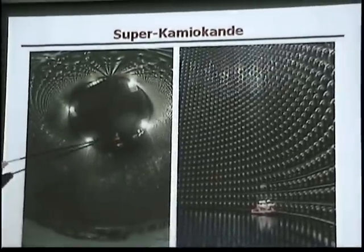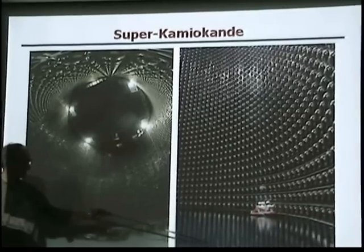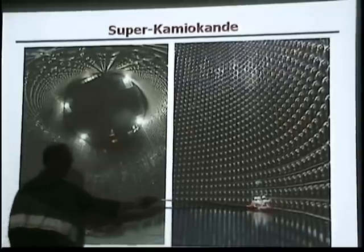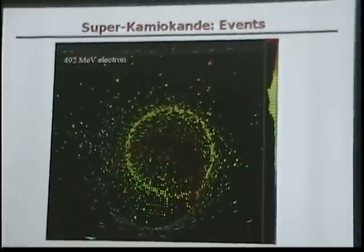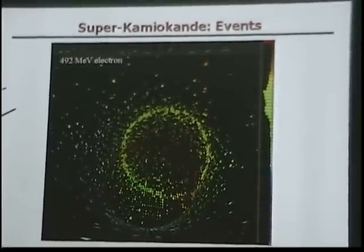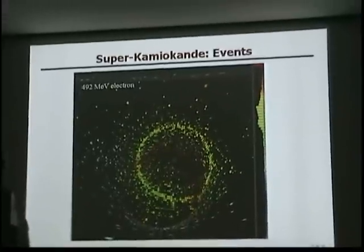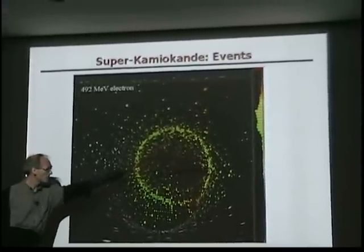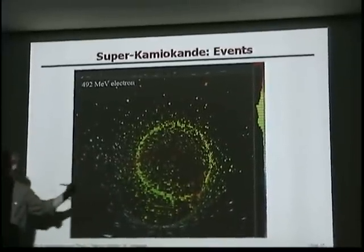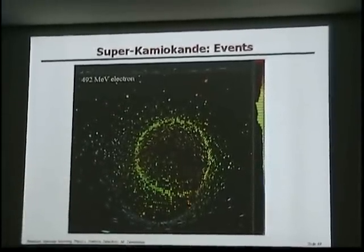This picture is from the bottom — here again is the access hole. This is when the detector was being filled with water, and in a little rubber boat they were servicing the photomultipliers. Here is what an event actually looks like: an electron from a neutrino interaction — an electron neutrino creates an electron, which travels faster than the speed of light in water and emits Cherenkov radiation at a very specific angle. This is how an electron looks, and this is how a muon looks.